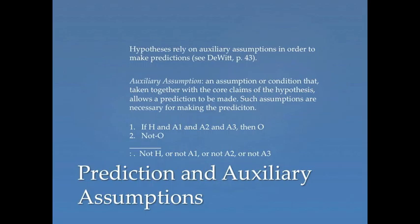So if this view is right, then yielding an observation consequence, or making a prediction, is more complicated. It's not just, if H, then O. It's more like this: if H, and A1, and A2, and A3, and so on, then O. If predictions require this more complex set of auxiliary assumptions and the core claims of the hypothesis, then when the prediction fails, it doesn't follow that the core claims, H, are false. The problem could lie anywhere within the set.